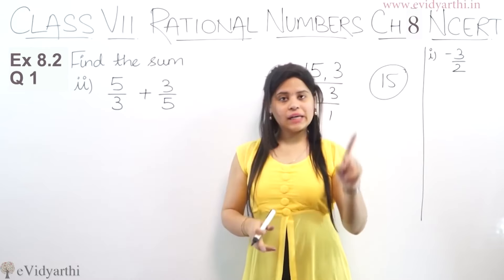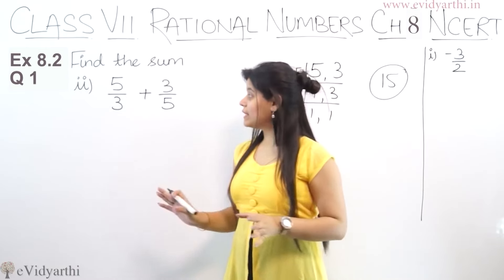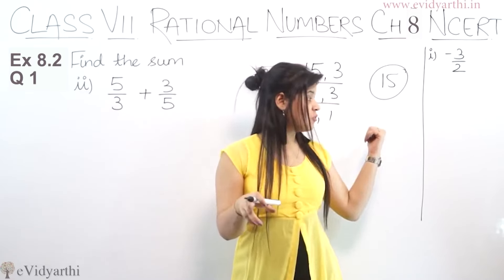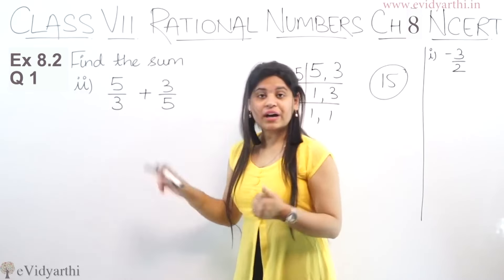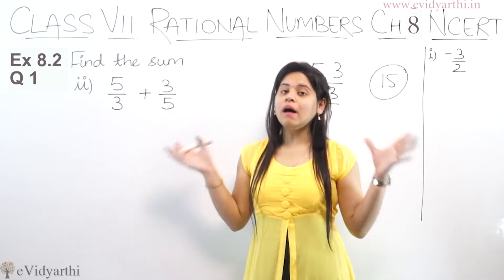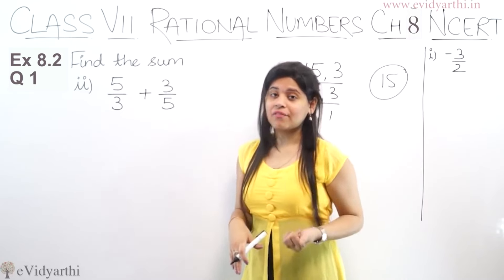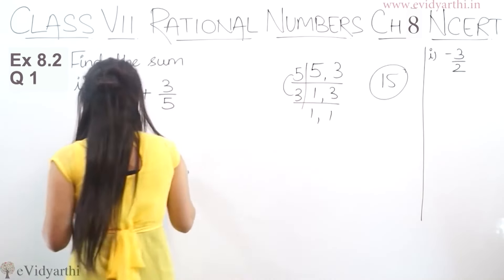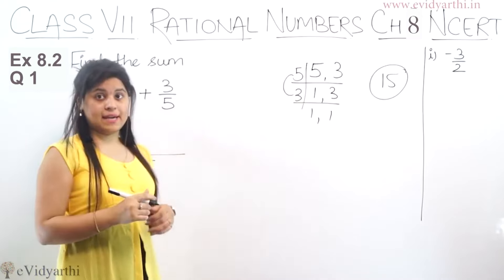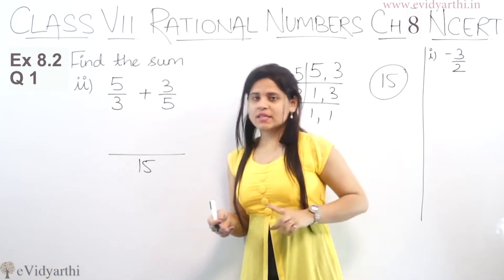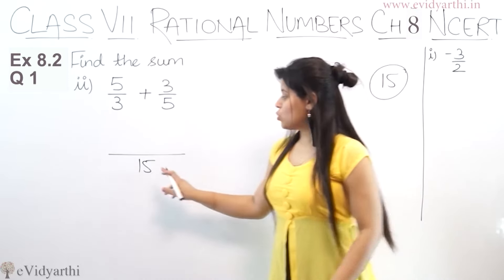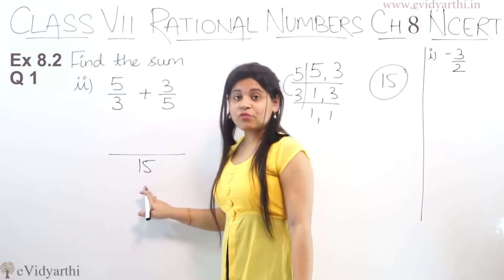There is a long cut and a short cut to solve this. The long cut is: first take 5 upon 3, make its denominator 15, then take 3 upon 5, make its denominator 15, then add the resulting numbers. But there is also a short cut where you can directly write 15 as the denominator here. Just be careful with your calculation so you don't make a mistake.